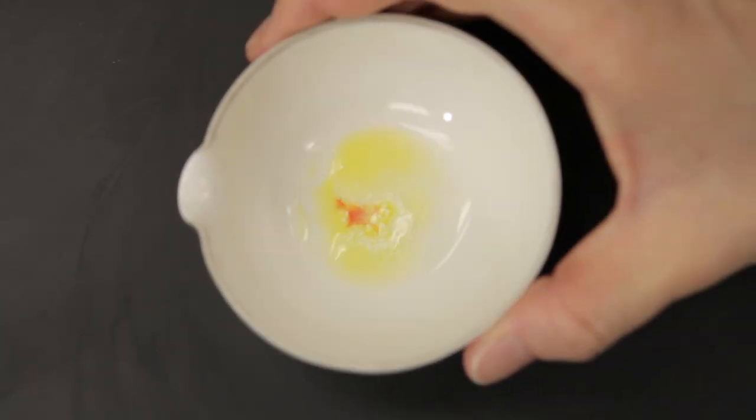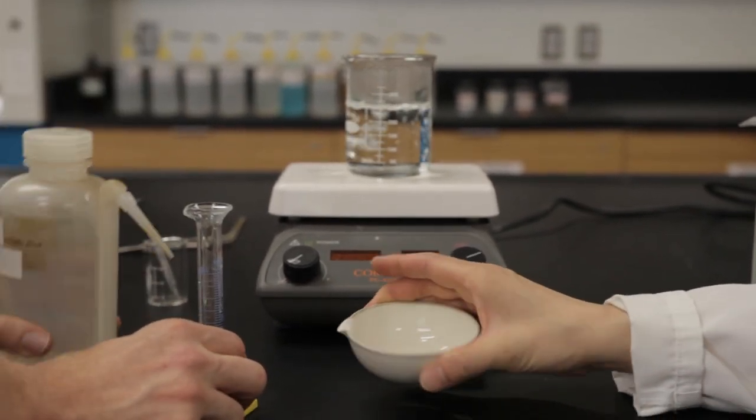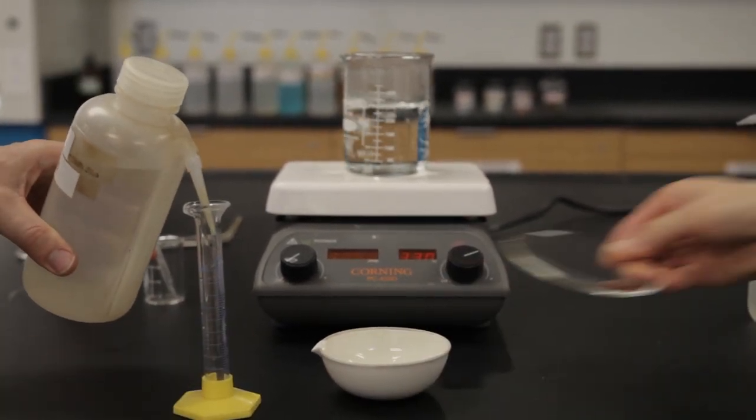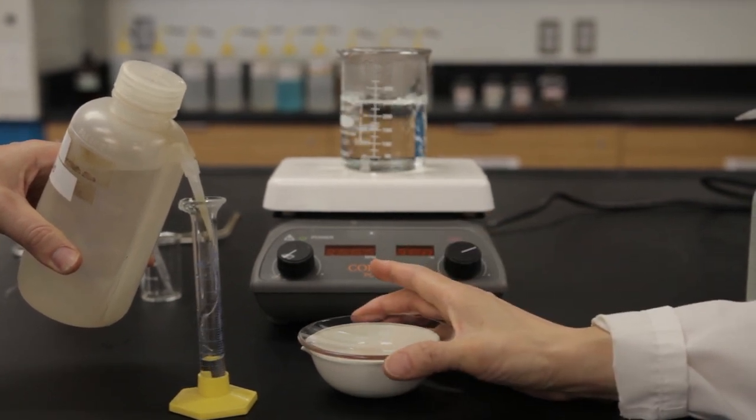Obtain about five milliliters of 3.0 molar hydrochloric acid in a graduated cylinder. Cover the evaporating dish with a clean and dry watch glass.